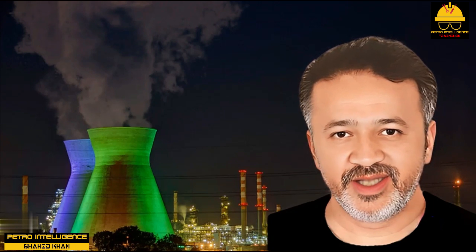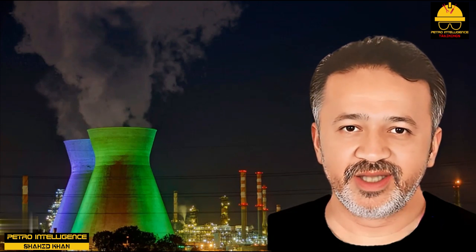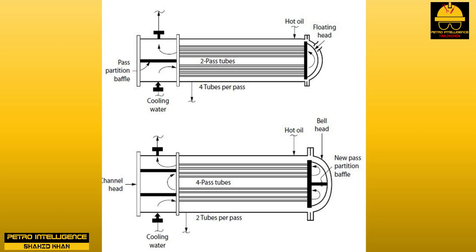A large percentage of fouling deposits on the cooling water side of exchangers are manganese. This is mainly a result of biological activity rather than contamination of the cooling water system make-up water. Effective chlorination will suppress such fouling with manganese salts.